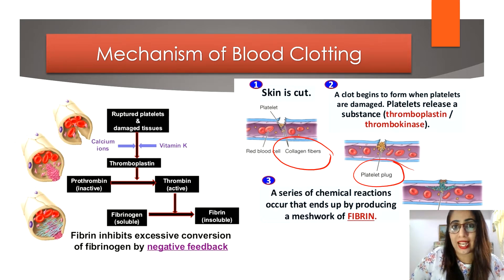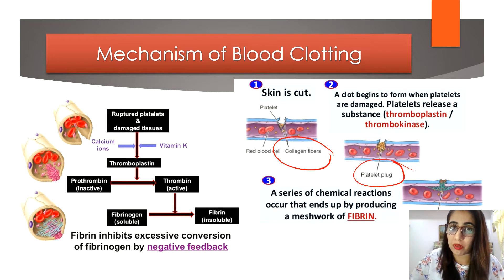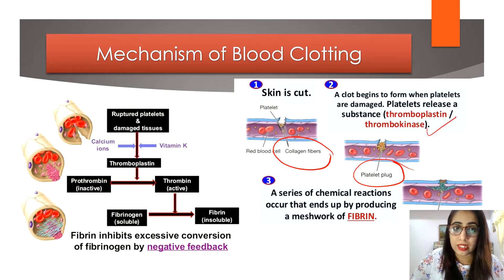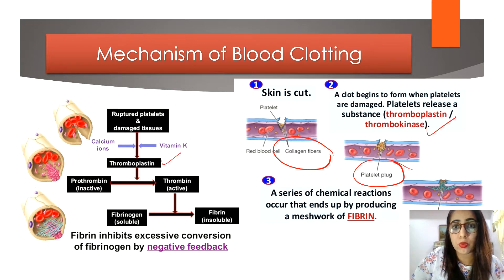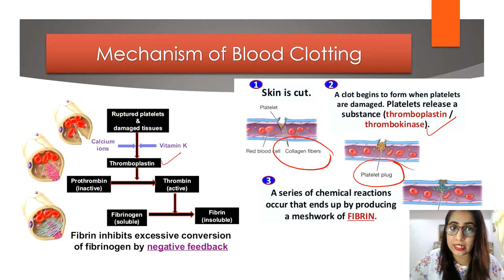The coagulated platelets release an enzyme called thromboplastin. With the presence of calcium ions and vitamin K, thromboplastin will convert the inactive protein prothrombin into active thrombin.